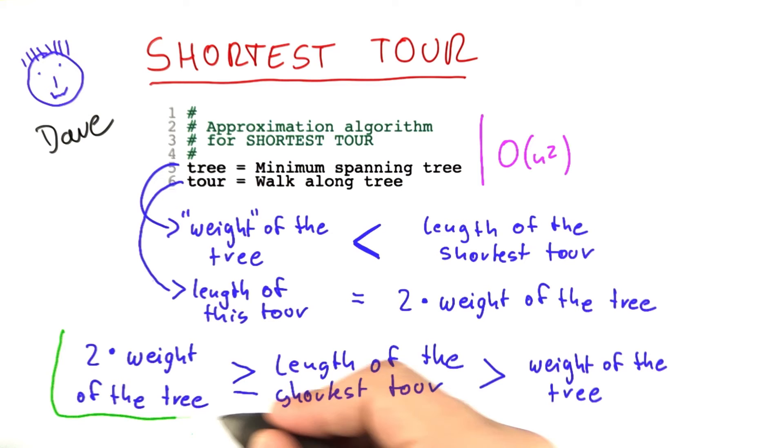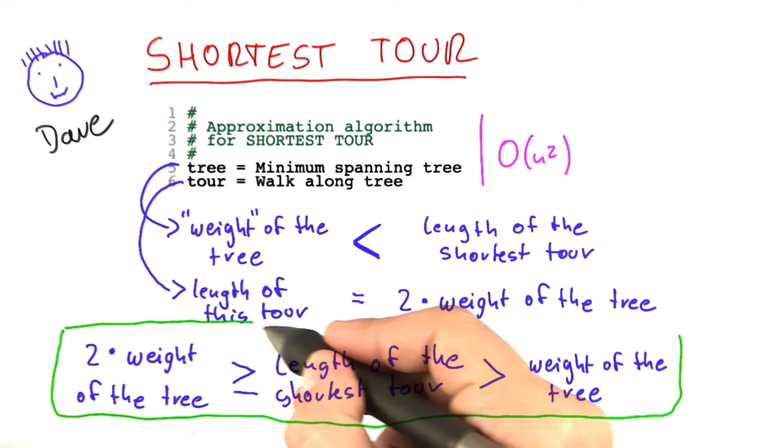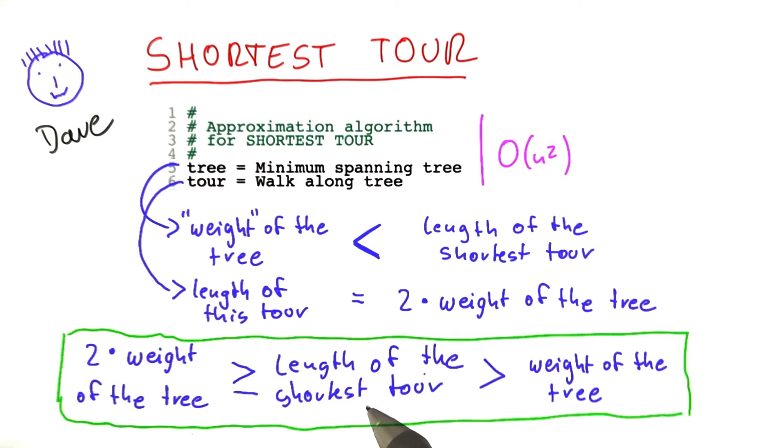Now isn't that beautiful? At least I think so. So the length of the shortest tour must lie somewhere in between the weight of a minimum spanning tree and the solution that you have just computed, which is twice the weight of the spanning tree.